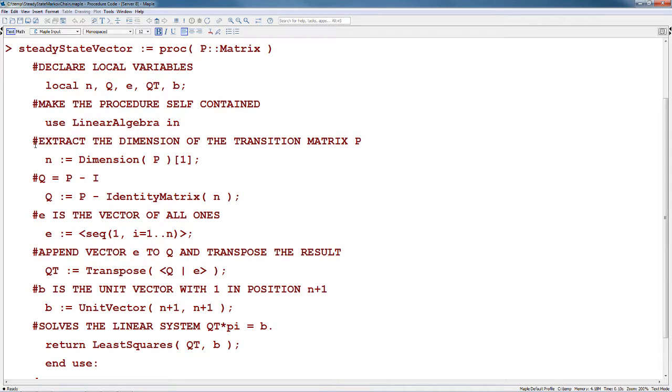So the code: extracting the dimension of the transition matrix P is done using n := Dimension(P). Then we compute Q, which is assigned to be P minus the identity matrix of size n.